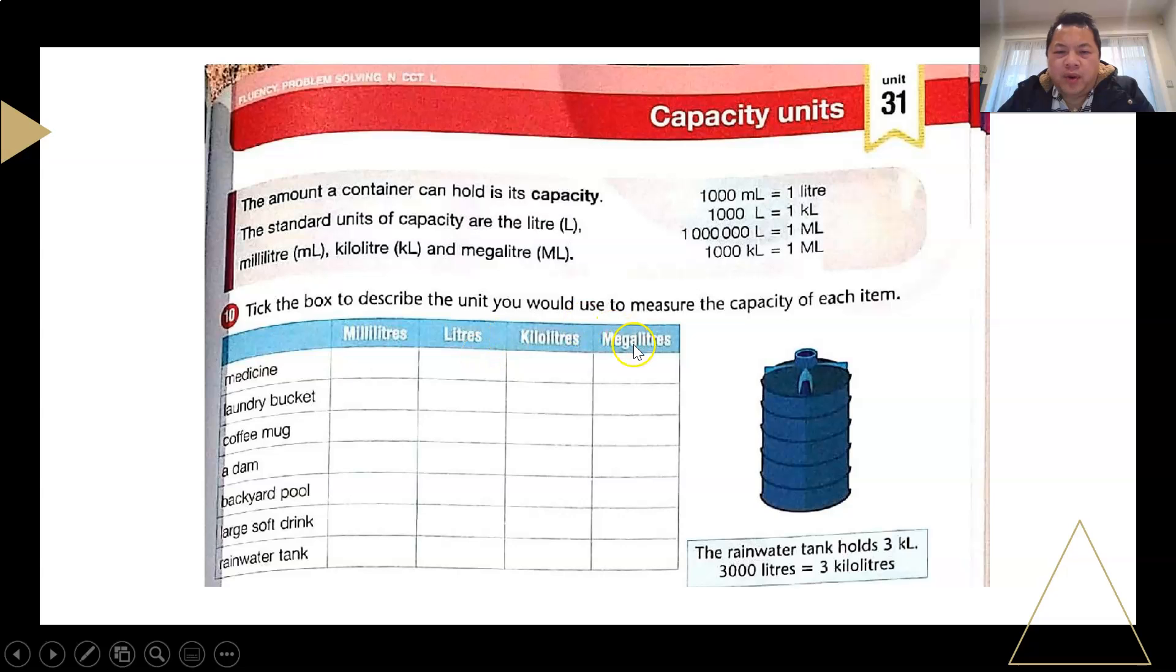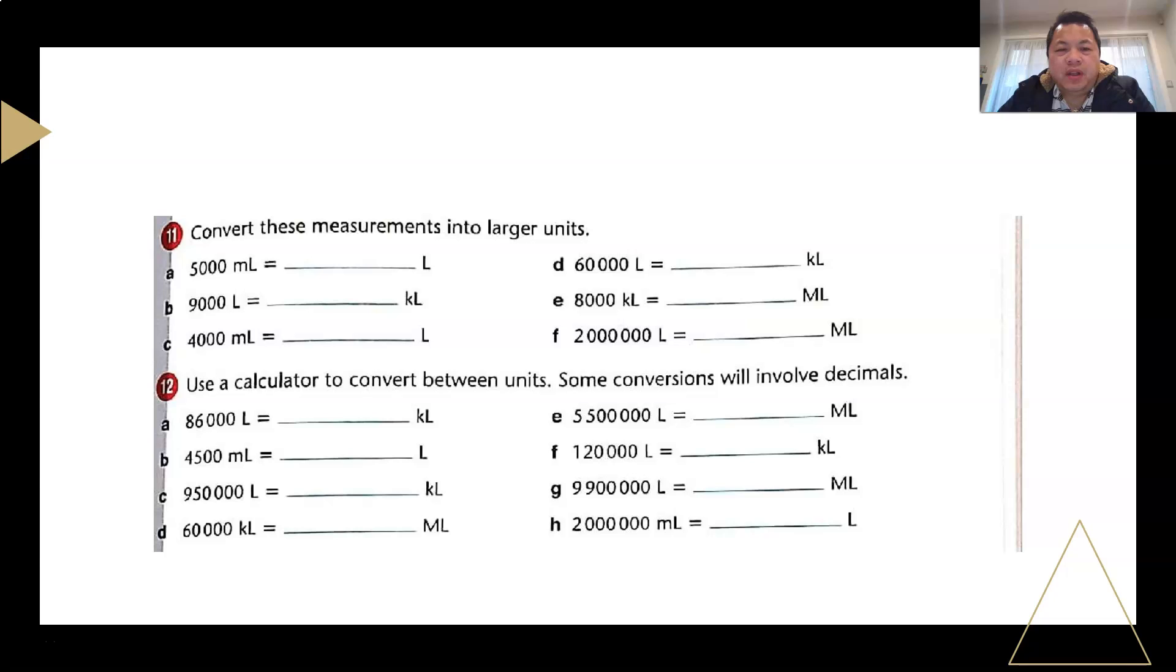You are required to make a guess on what is the measurement that you would use for each of these items here. For medicine, we will use milliliters, that's right. Laundry basket in terms of liters, coffee mug in terms of milliliters, a dam will be megaliters because a dam can hold a lot of water. A backyard pool, to be honest, it should be between kiloliters and megaliters, depending on how big is the pool. Large soft drink will be in liters, and rainwater tank will be in terms of kiloliters normally.